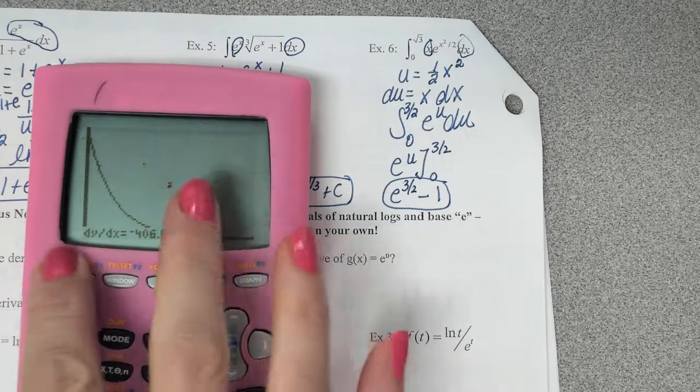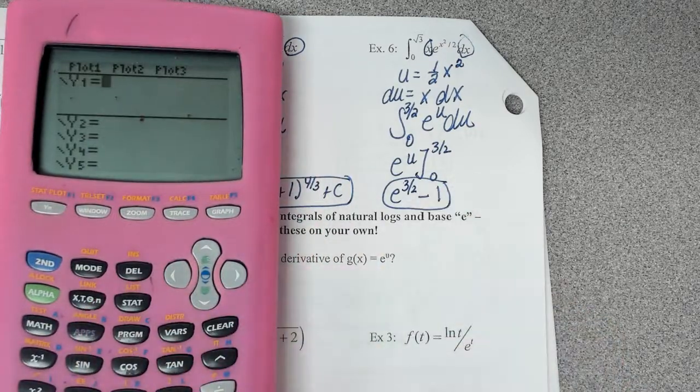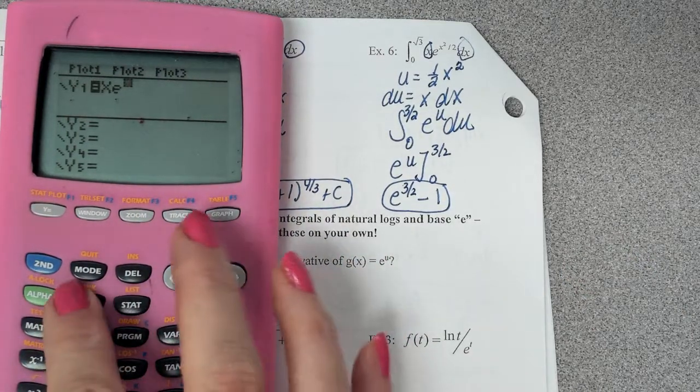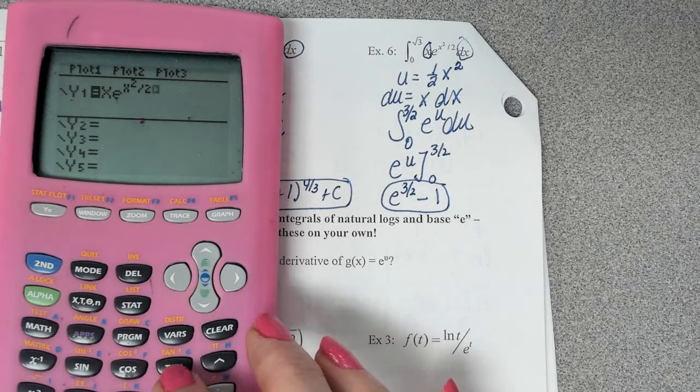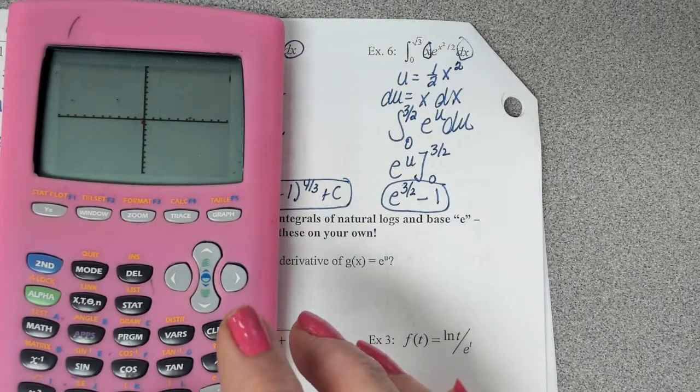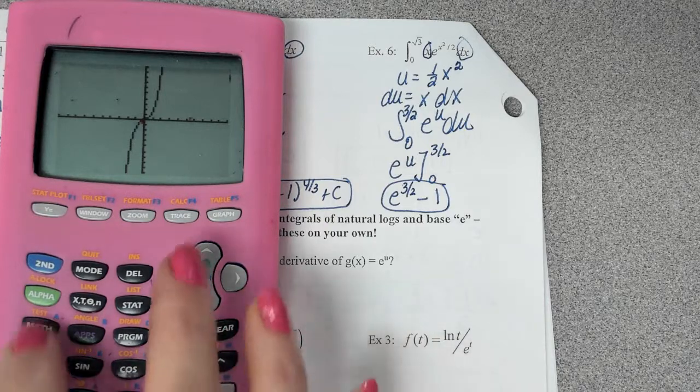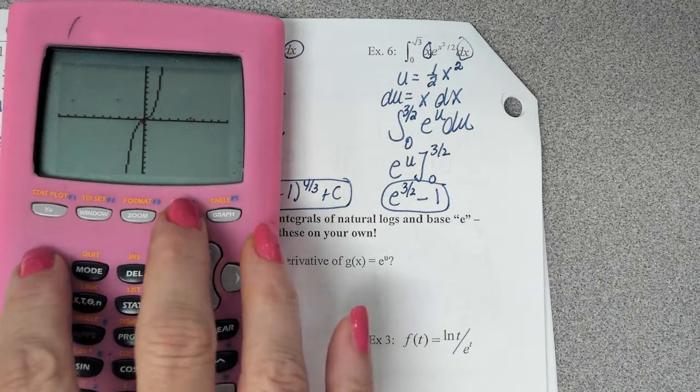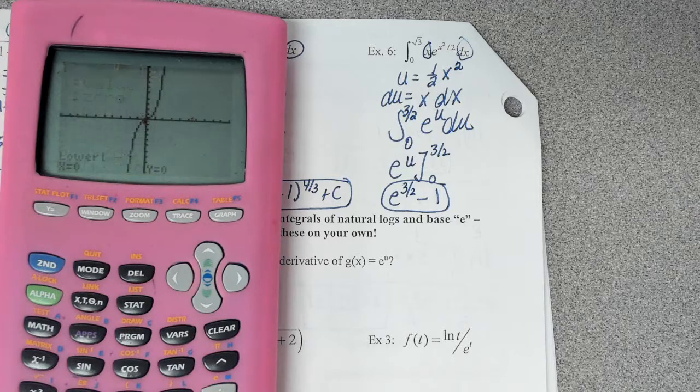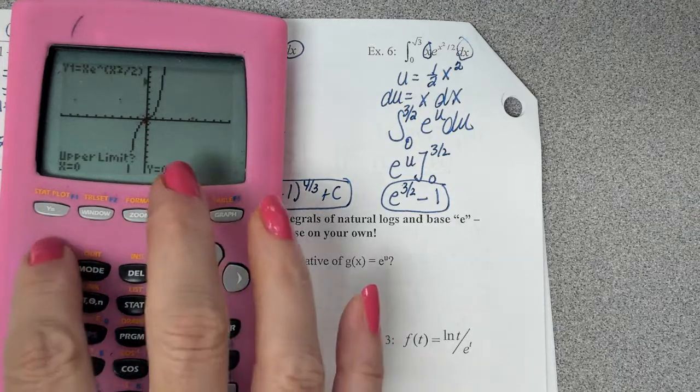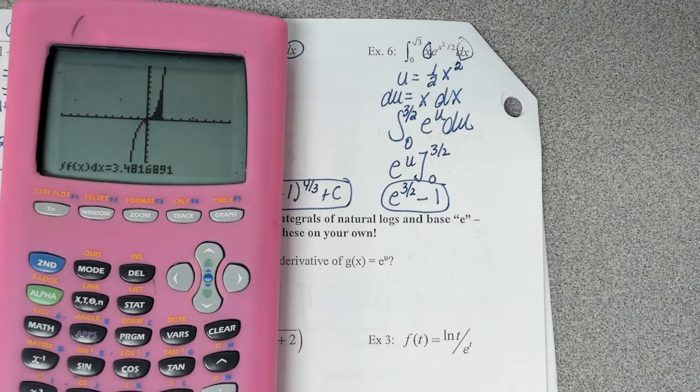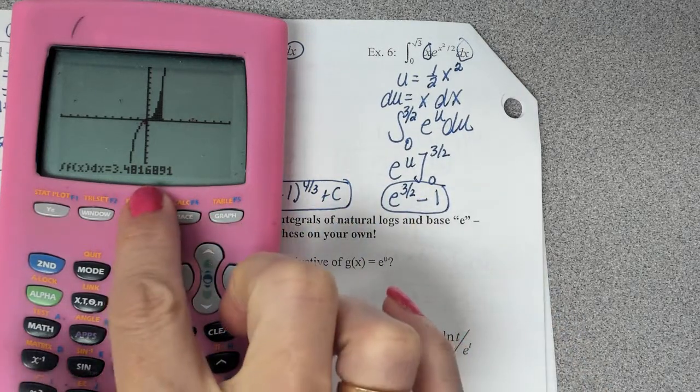Let me remind you of something. You can go to your y equals. I can put in x e to the x squared over 2. All right. So I'm plugging in my function. I'm going to do a zoom 6. That's not correct. Just ignore that. It's correct. Okay. Go now to second trace calculate. And we want to find the integral. So down here to number 7. And we're going to go from 0, enter, to radical 3. Enter. And so this is the approximate answer.